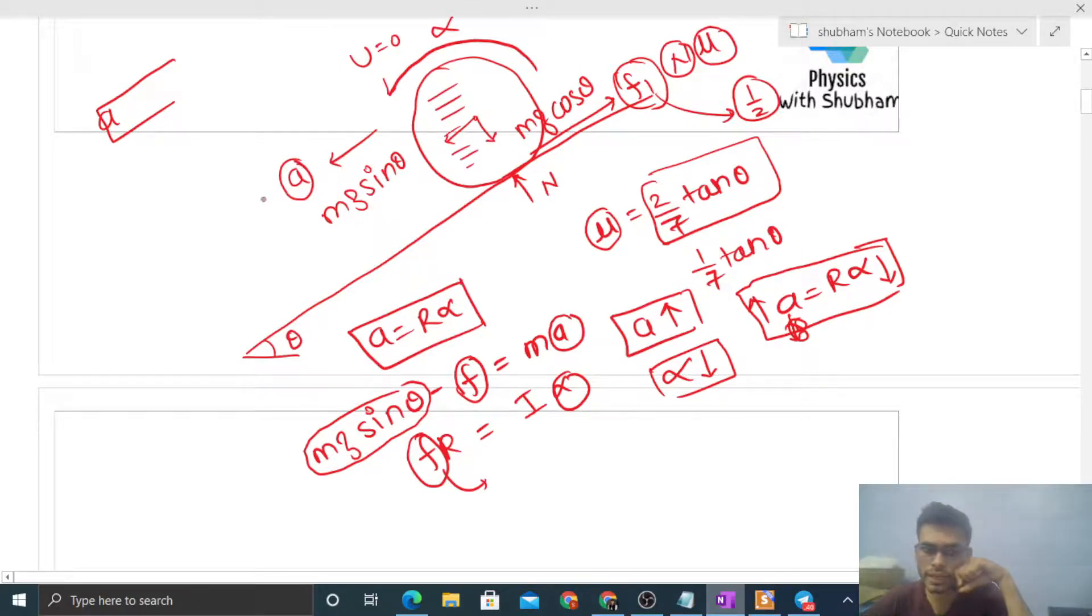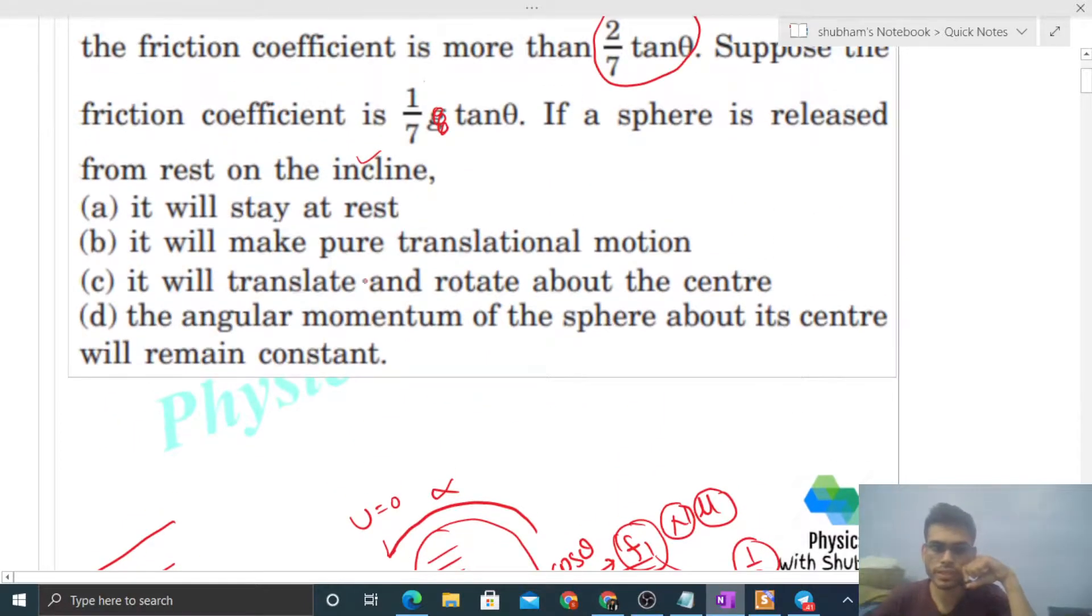Rather, your sphere parallel to the inclined surface will still accelerate with some acceleration a and will also rotate with some angular acceleration alpha, but this equation a equals r alpha will not be valid. Let's see the options.